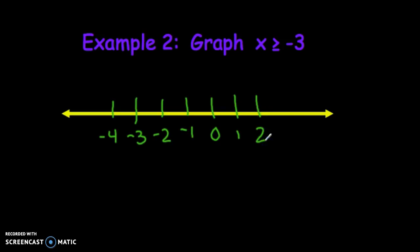And then I want to graph all the numbers that are greater than or equal to negative 3. So this time I have my boundary at negative 3. Negative 3 is greater than or equal to negative 3 because negative 3 equals negative 3. So on negative 3, I'm going to close in my circle, fill in that dot.